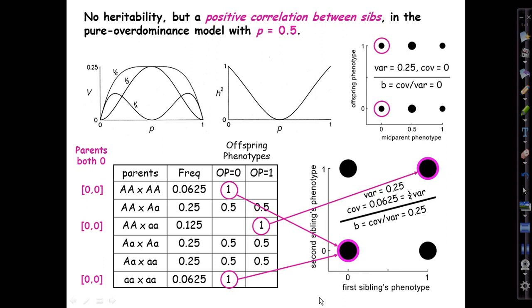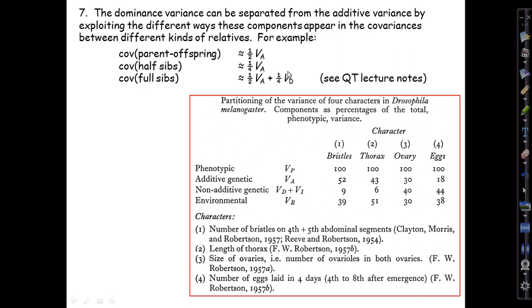This logic, which is in the lecture notes, allowed breeders back in the day to estimate the dominance contribution just by making full-sib and half-sib families of their fruit flies or cows or corn lines or whatever.